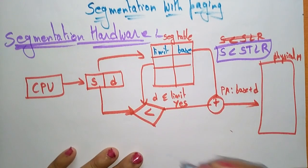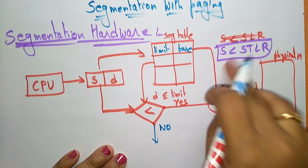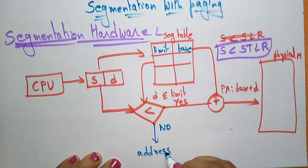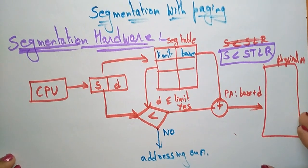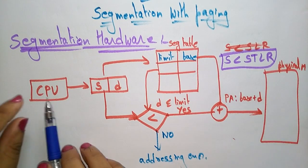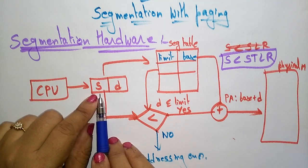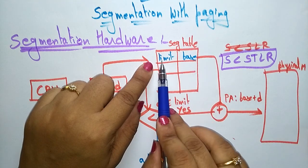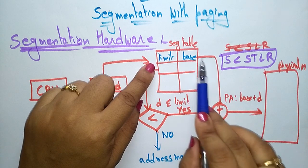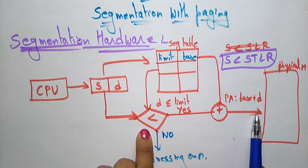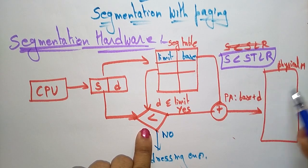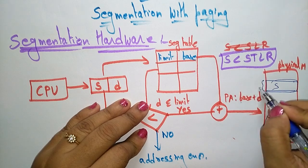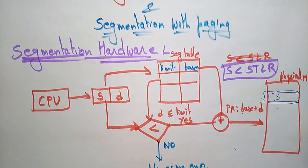This is how the data is converted. If the offset does not satisfy the condition — if the segment is greater than the segment table length register — then an addressing error will occur. In summary, the CPU sends segments where each holds a segment name and offset; the segment table stores the limit (segment length) and the base (starting physical address); base plus offset gives the physical location where the segment is stored.